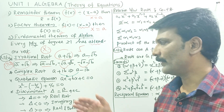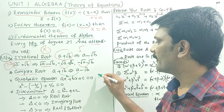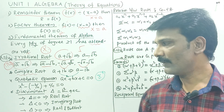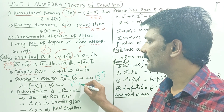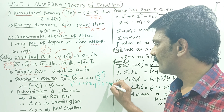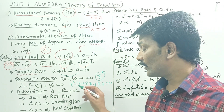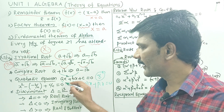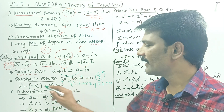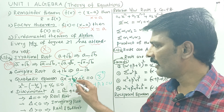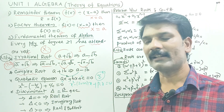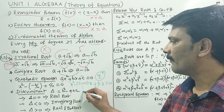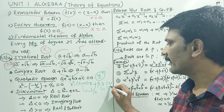Next is the quadratic equation: ax² plus bx plus c equal to 0. Our formula states x² minus (sum of roots) times x plus (product of roots) equals 0. Sum of roots is minus b by a. Product of roots is c by a.